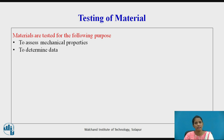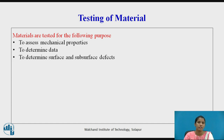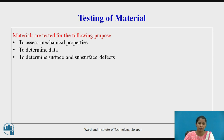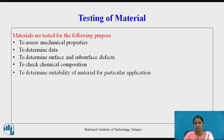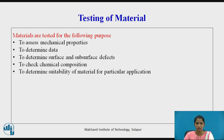To determine data for design and analysis purposes. To determine surface and subsurface defects — various methods exist to detect these, and both destructive and non-destructive methods are used. To check the chemical composition of metals, and to determine suitability of a material for a particular application.